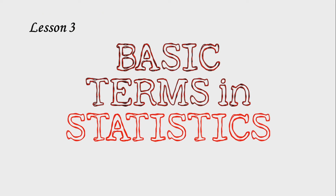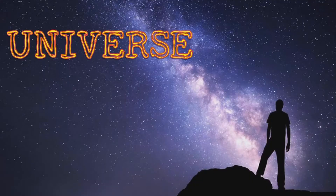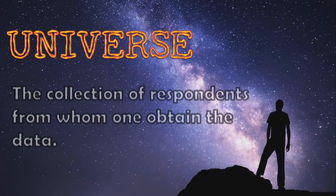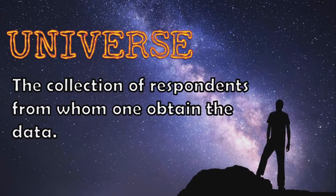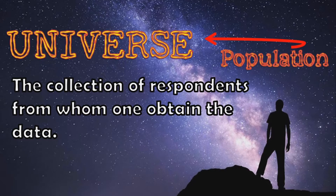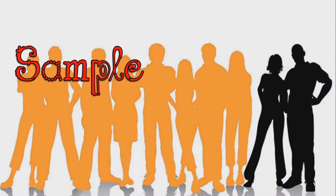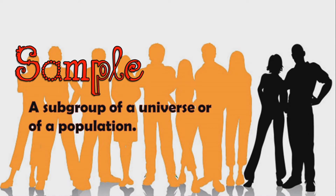Now let us proceed to our next lesson — Lesson Number 3: Basic Terms in Statistics. First, universe. Universe is the collection of respondents from whom one obtained the data; others call it population. Next, sample. Sample is a subgroup of a universe or of a population.